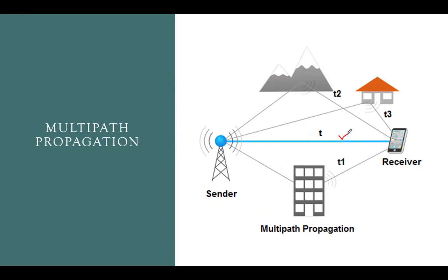In a practical scenario, apart from line-of-sight transmission, there are other waves that get reflected by different obstacles. In this picture, we have a transmitter and a receiver — the blue line indicates the line-of-sight signal. But there are also other signal versions reflected by different obstacles: one signal gets reflected by a building, another by a mountain, and a third by another building.